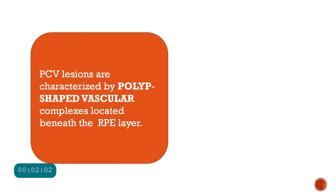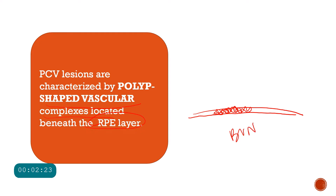As the name suggests, the PCV lesions are characterized by polyp-shaped vascular complexes located beneath the RPE. Below the RPE and the Bruch's membrane, certain abnormal vessels grow as a network — called the branching vascular networks. These branching vascular networks in turn lead to the formation of polyp-shaped detachment of the RPE, and the vascular complexes themselves can also take a polyp shape present below this RPE detachment.